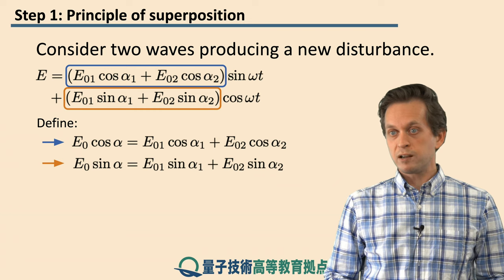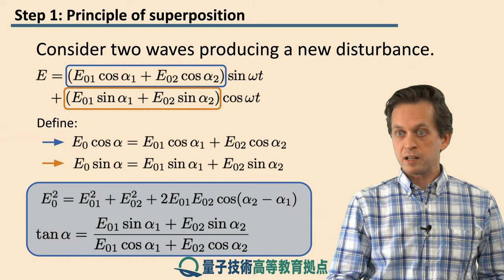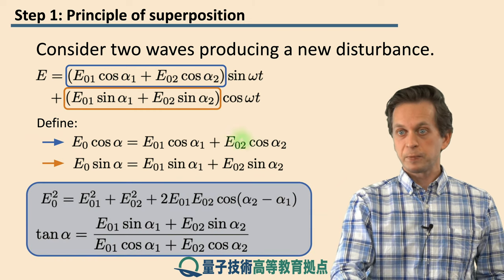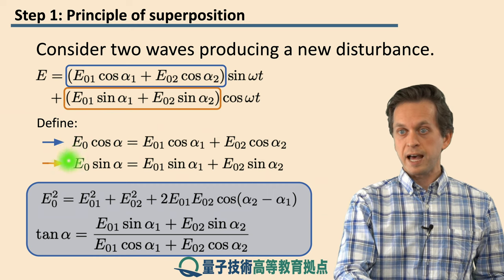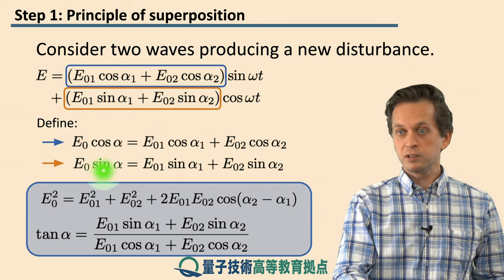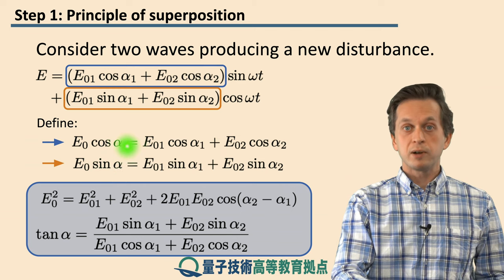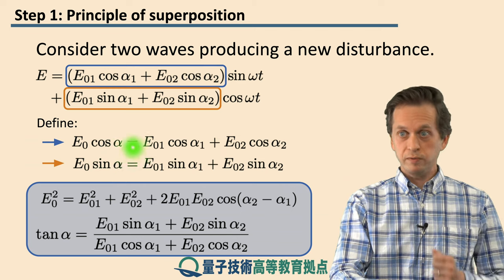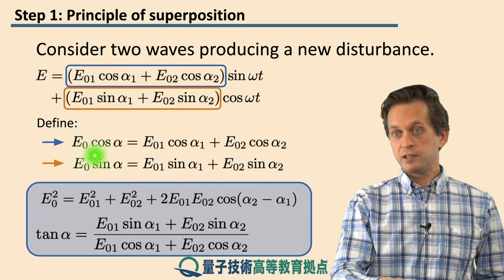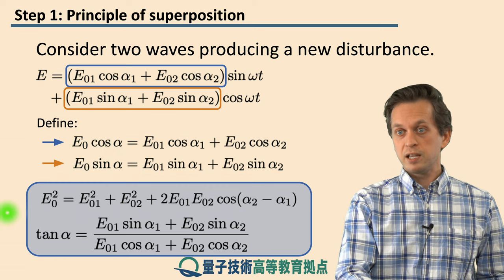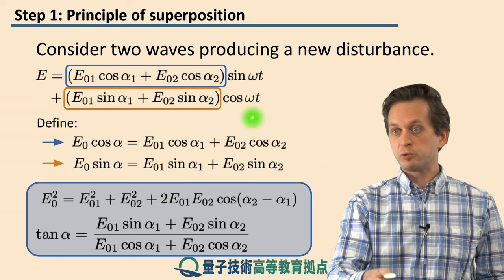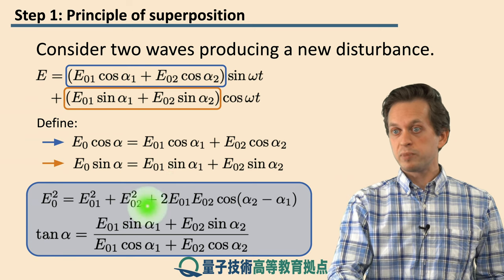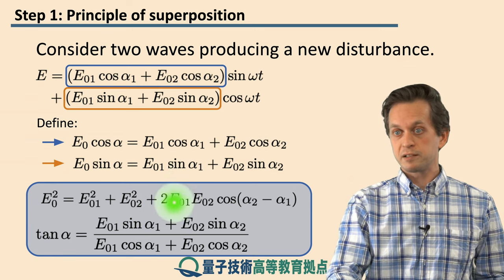And what we can do now is we can define E₀ cos α as this whole first expression, and E₀ sin α as the second expression. And now with a little bit of algebra, what we arrive at are the following expressions. So if we square this first expression and add it to the square of the second expression, cos² α plus sin² α is equal to 1. That's a very important trigonometric identity. So on this side we get E₀ squared. And then we just have the squares which we have expanded over here and simplified with some trigonometric identities.